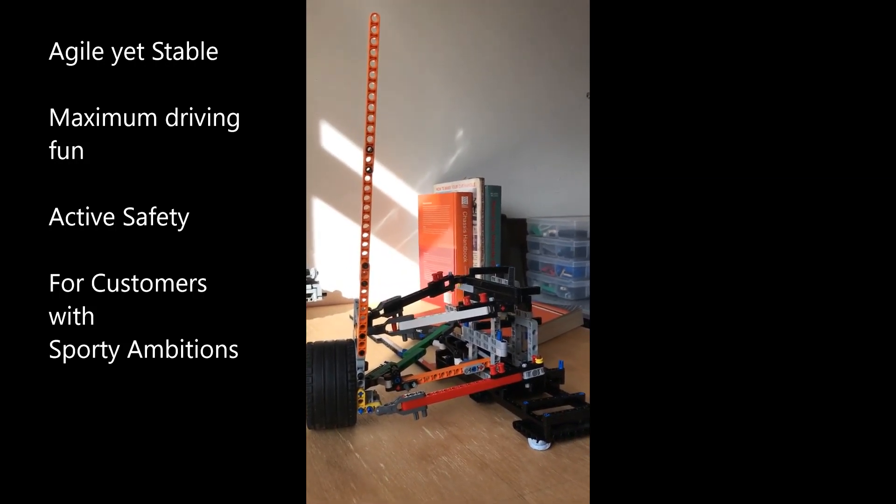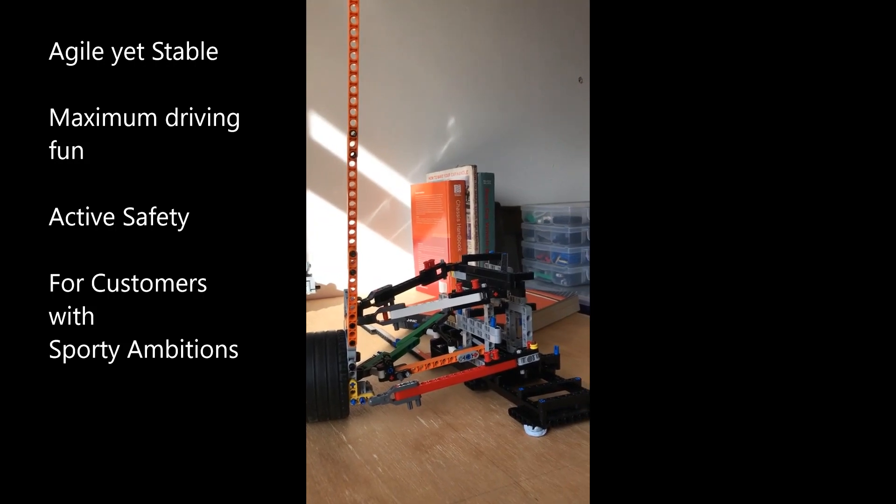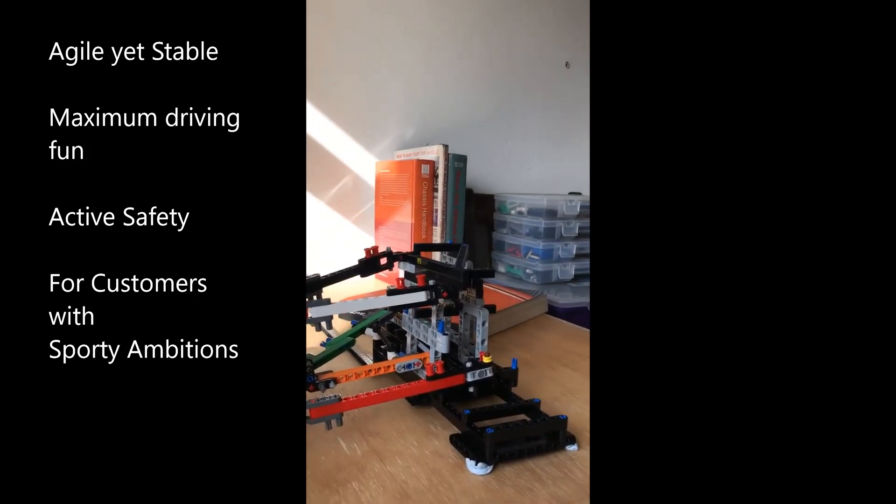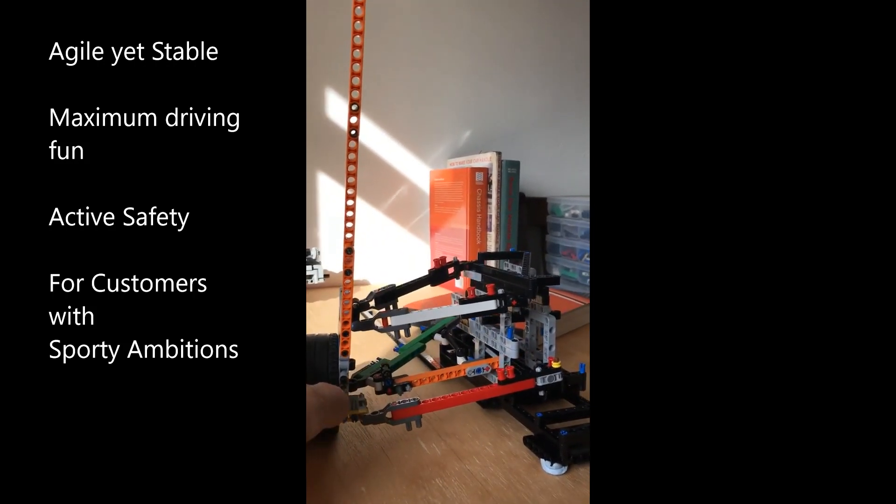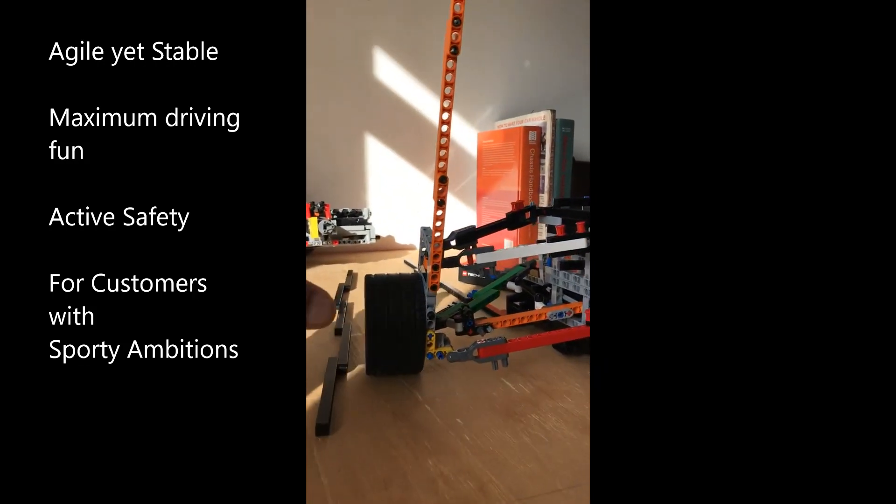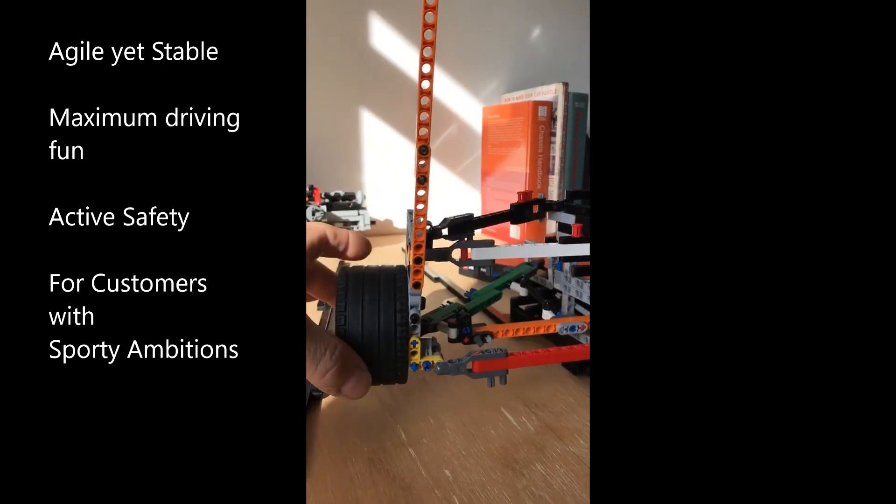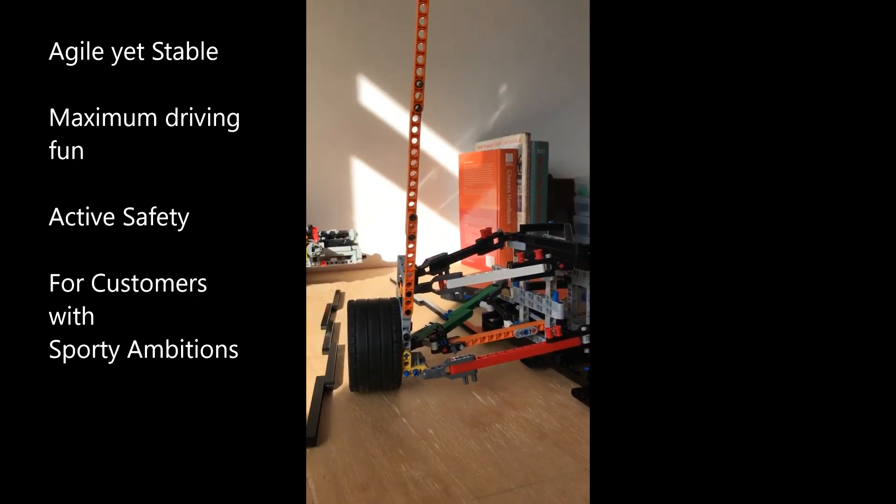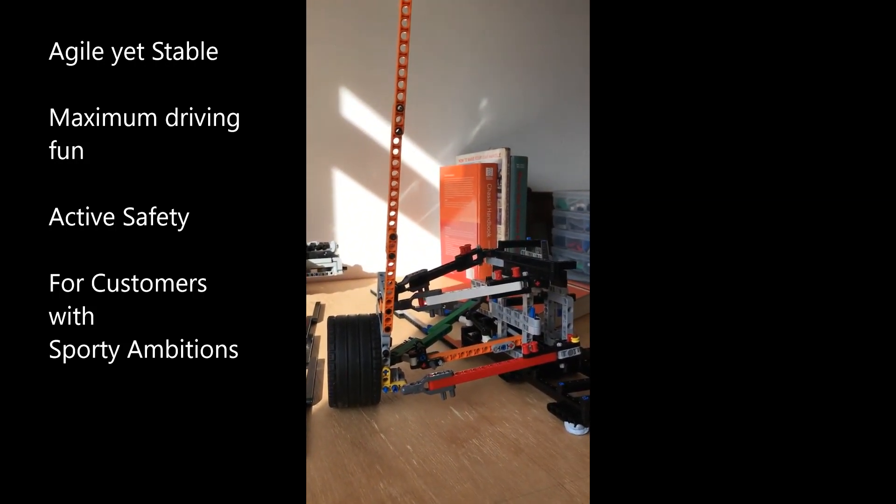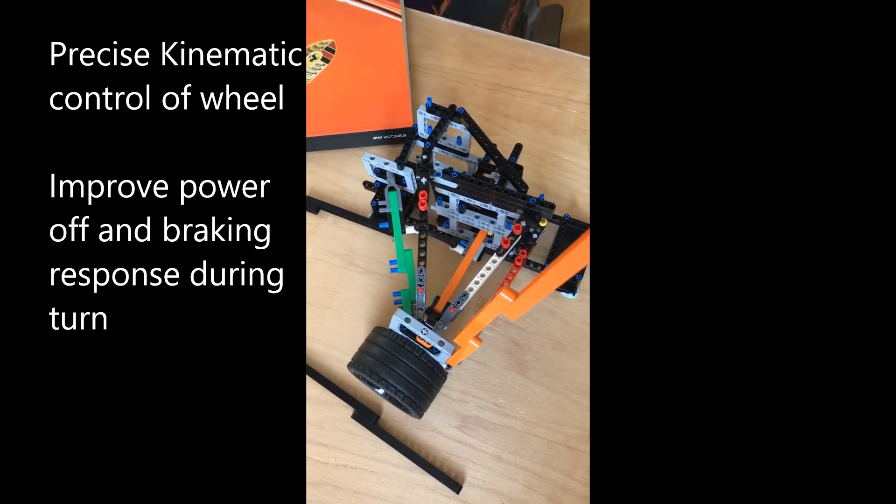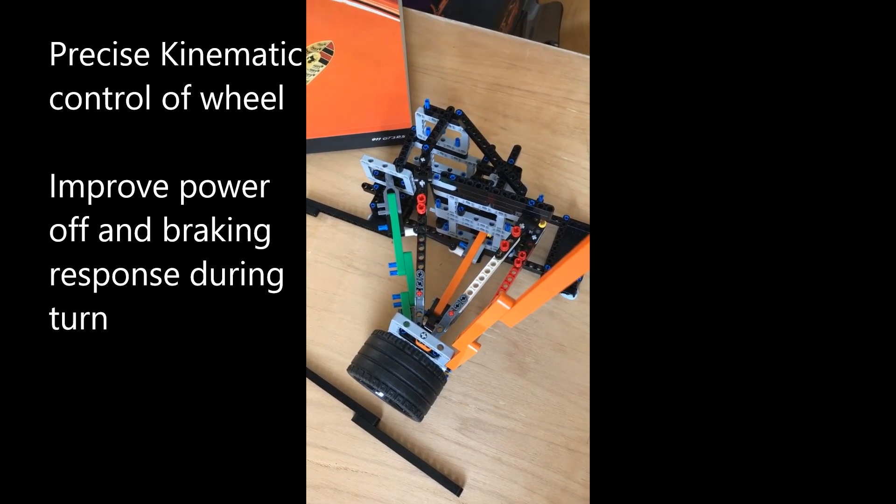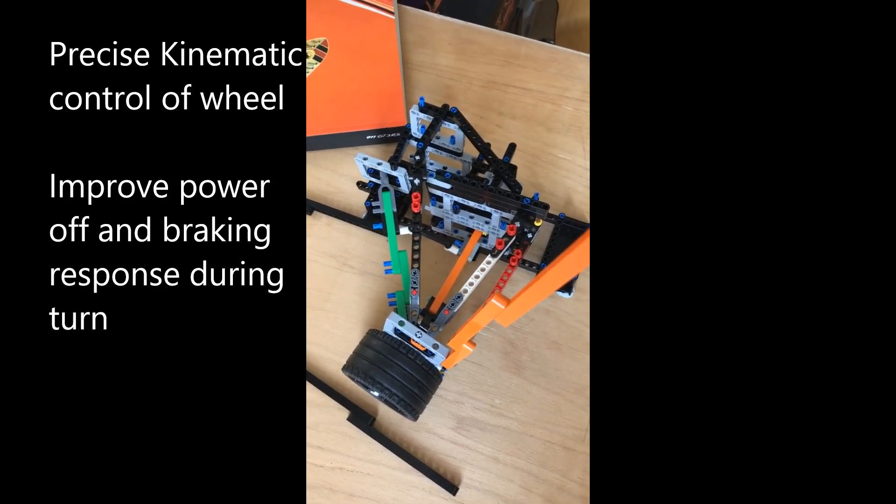Now kinematics is the study of the geometry of motion. So if I move this wheel up and down, the suspension guides the position of this wheel in space accurately.